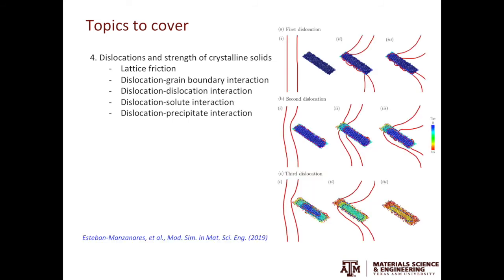In the last part, we'll discuss dislocations and the strength of crystalline solids. We'll look at lattice friction, then dislocation–grain boundary, dislocation–dislocation, dislocation–solute, and dislocation–precipitate interactions. The example on this slide shows the interaction of dislocation lines with precipitates in a magnesium alloy using molecular dynamics simulations.